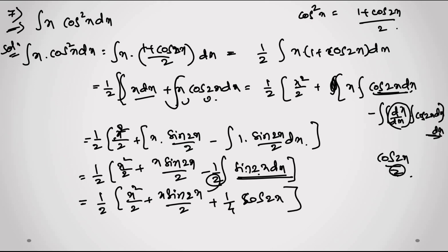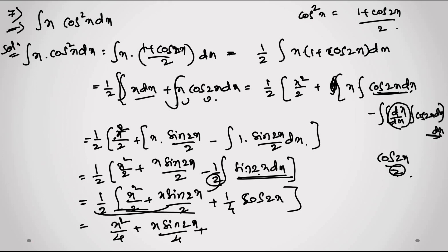Multiplying through by 1/2, the final answer is: x²/4 + x·sin(2x)/4 + cos(2x)/8 + c. You can add c or leave it as needed.